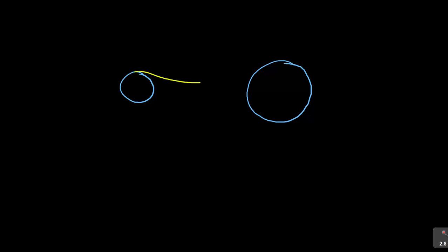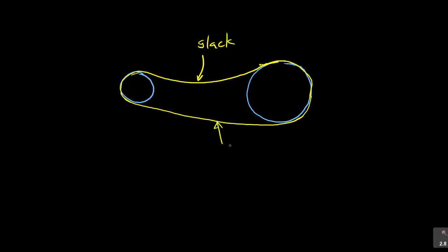On the belt diagram, one side is called the slack side and the other is called the tight side. The tight side is referred to as T1, and the slack side is referred to as T2. T1 corresponds to pulley diameter D1, and T2 corresponds to pulley diameter D2. The smaller pulley is the driver and the larger pulley is the driven. This information is essential for understanding what the problem is referring to.